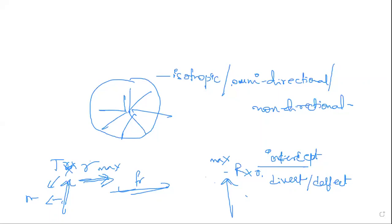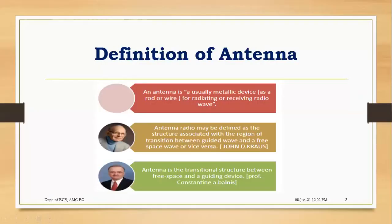There is one more definition with respect to the IEEE standard. The antenna is simply a means of radiating or receiving electromagnetic waves. An antenna is usually a metallic device — a rod or wire — which is mainly used for radiating or receiving radio waves or electromagnetic waves. One more definition: an antenna may be defined as a structure associated with the region of transition between a guided wave and free space, or it can be vice versa.